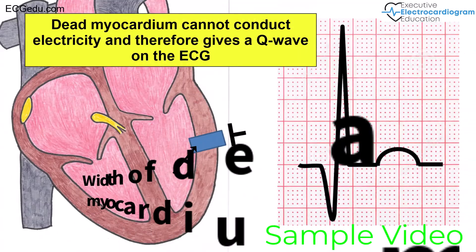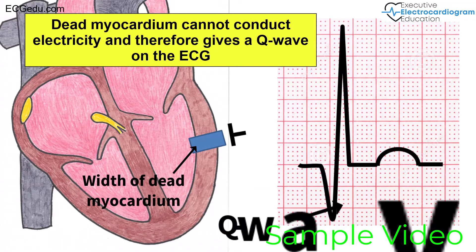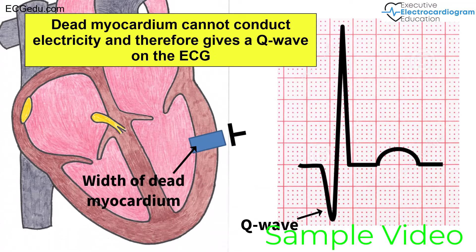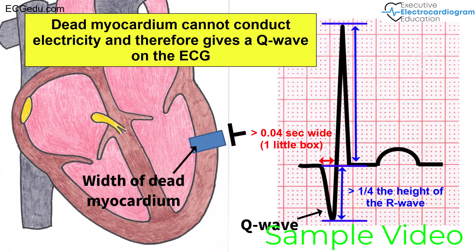If the complete width of heart muscle is infarcted or dead, it cannot conduct electrical currents at all and we see a Q wave. Q waves are considered significant if they are greater than 0.04 seconds or one little box wide and greater than one-fourth the height of the R wave.